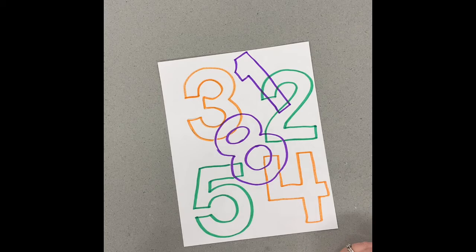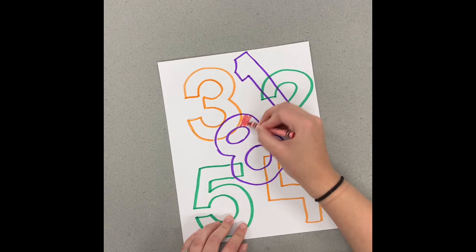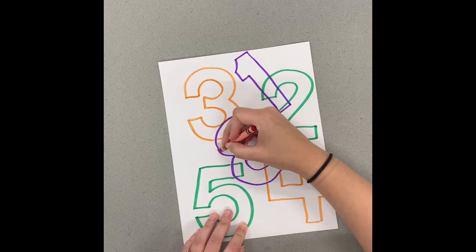Next, we're going to use crayons in a different color family to color in our spaces, but you're not coloring in the whole number one color. You'll notice on most of my eight, I'm going to color it red. I'm not going to color the whole thing red. Those places where they overlap, we want to do a different color just to make it look more interesting.